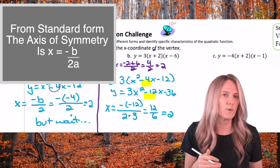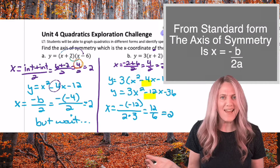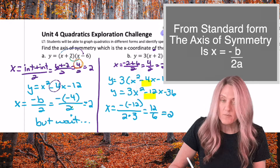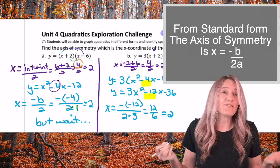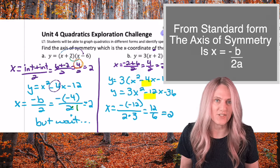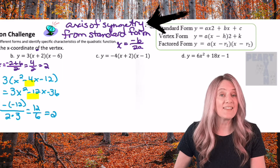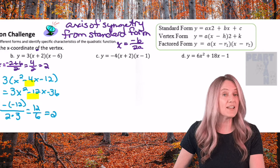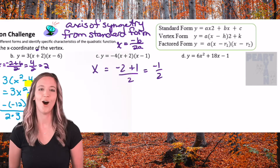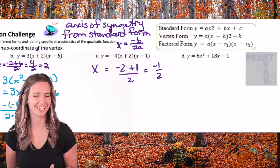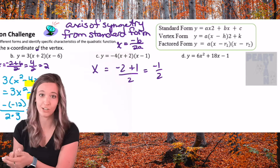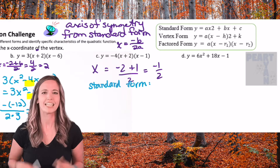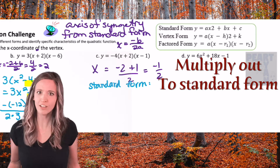So what happened on the first one? Why didn't we have a problem with a? On the first one a was 1, so dividing out 1 still gives 2 as the final answer. Write it down: to find the axis of symmetry from standard form, we take the opposite of b and divide it by 2a. So as I look at the next example in factored form, intercept plus intercept divided by 2 gives axis of symmetry equals negative one half. Let's reinforce finding the axis of symmetry using standard form.